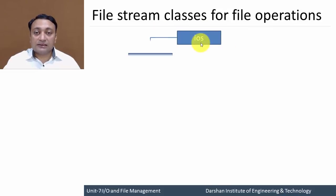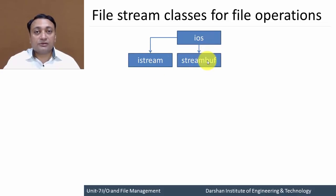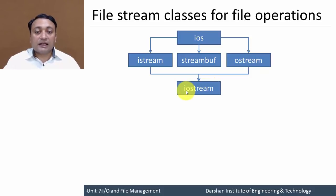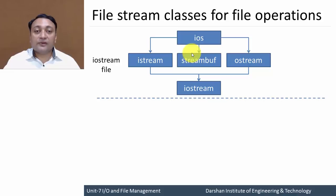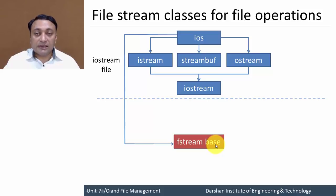For file operations we have the ios class, which derives the istream class for input, a stream buffer class as a pointer to the buffer, and the ostream class for output. Using multiple inheritance, iostream class is derived from both istream and ostream, and using a virtual base class it inherits properties of the ios class. These classes are all defined in the iostream.h header file, so you are supposed to include iostream at the beginning of your program.